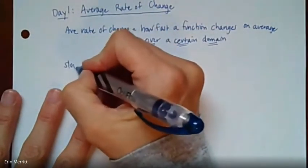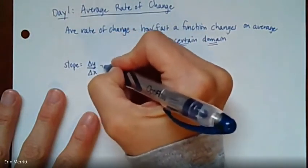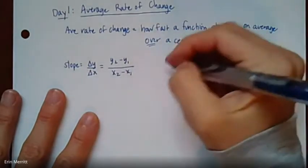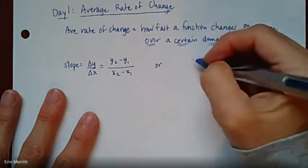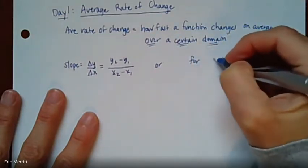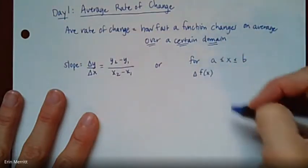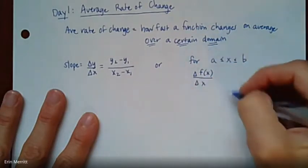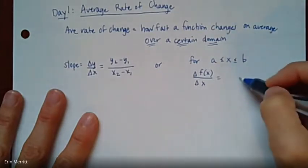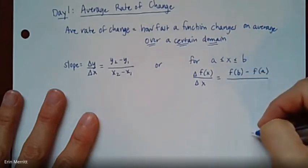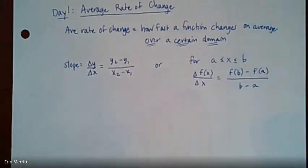So over a certain domain is pretty important, because if it's linear, then it's going to be the same rate of change. But otherwise, if it's not a linear function, you're going to see it kind of change throughout, right? So there's a couple ways you can write this. One way is to think of it as slope. And so in terms of slope, we say change in y over change in x, which essentially means y2 minus y1 over x2 minus x1. You will sometimes see it, and this is kind of like a pre-calc way to show it, is to say for an interval where x goes from a to b. So imagine those are like the little end points of a particular line. Then what we would say is that the change in f of x, so our function, over the change in x would be given by how much the y values change from a to b. So we write that as f(b) minus f(a), and then all over the change in the x's, b minus a.